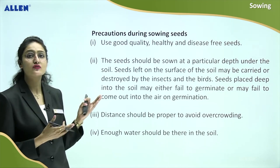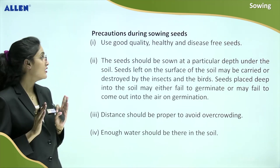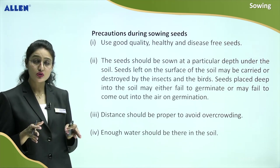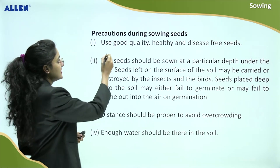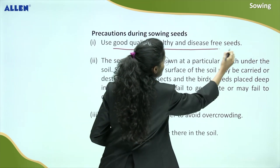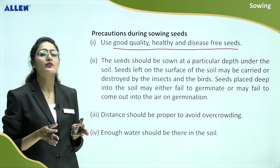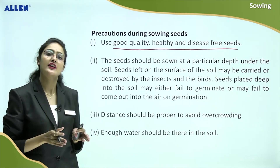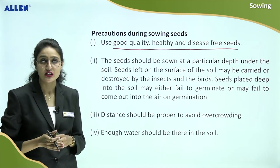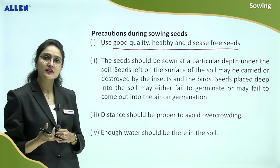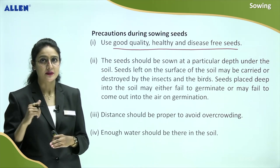There are some precautions to follow at the time of sowing. The first one is: use good quality, healthy, and disease-free seeds. The farmer must check the quality of the seed so that we can get a proper output and a proper yield. We need to sow healthy seeds — I had also mentioned a method by which we can select healthy seeds.